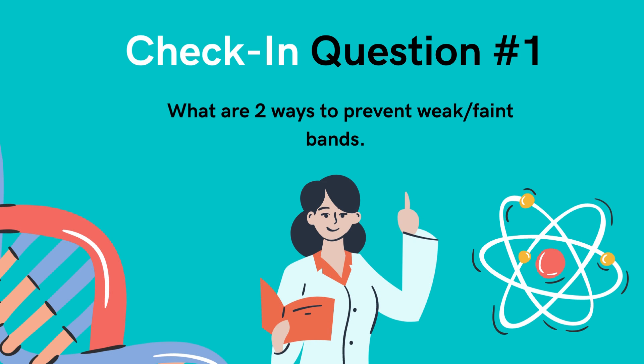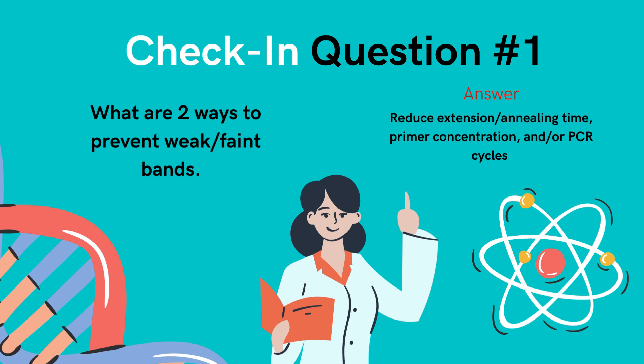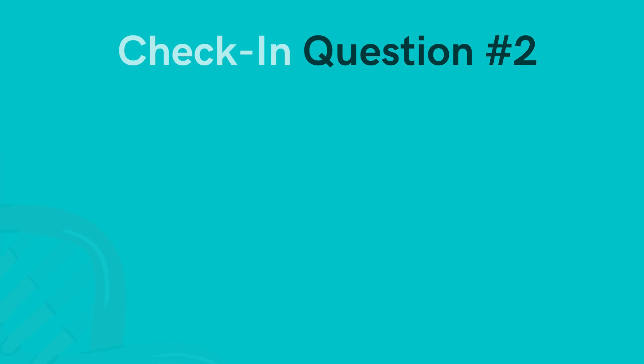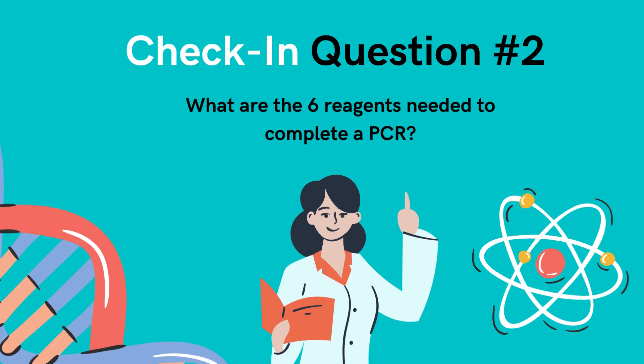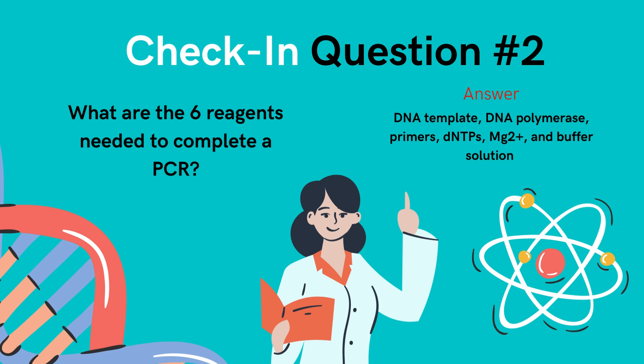What are the two ways to prevent weak or faint bands? Reduce extension or annealing time, primer concentration, and/or PCR cycles. What are the six reagents needed to complete a PCR? DNA template, DNA polymerase, primers, dNTPs, magnesium, and a buffer solution.